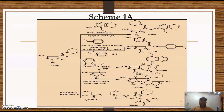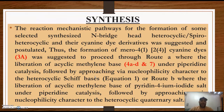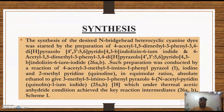Let's start with the synthesis of bridged heterolytic cyanine dyes, which we can see in scheme number one. These dyes were started by the preparation of 4-acetyl-1,5-dimethyl-3-phenyl-3,4-dihydropyrazole-3,4,6,7-pyrrolo and 4-acetyl-dimethyl, which has products 26a and b.